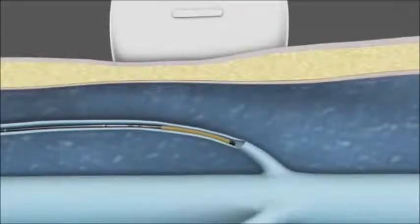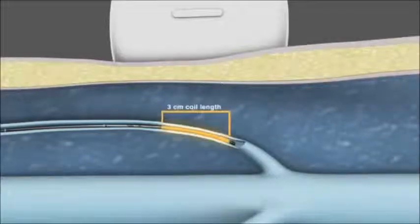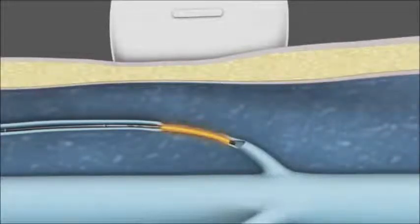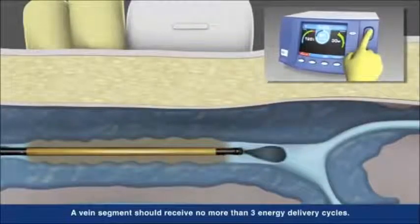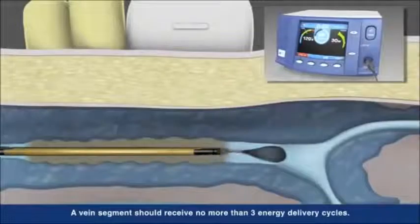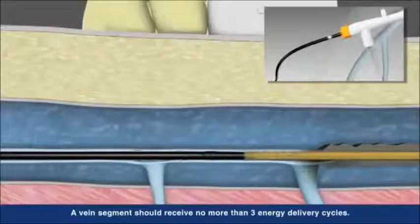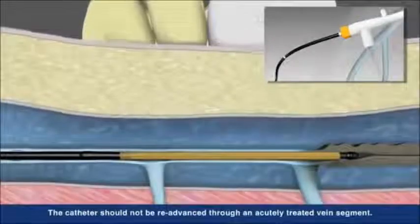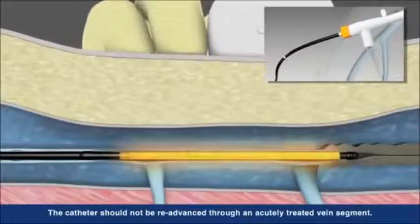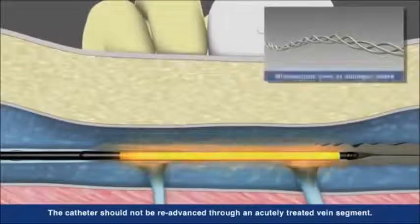Working together with the closure RFG generator, the catheter is designed to deliver controlled consistent heat to each segment. After each segment is treated, unique shaft markings on the catheter aid proper repositioning to the next segment. The heat provided by the catheter shrinks and denatures the collagen and smooth muscle.